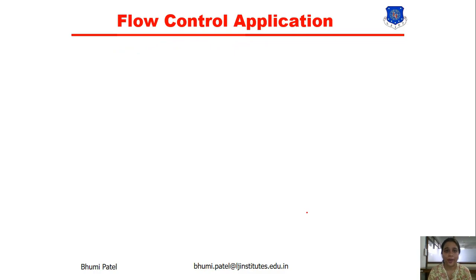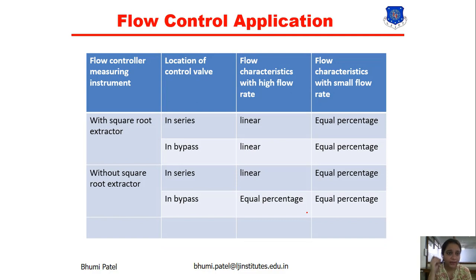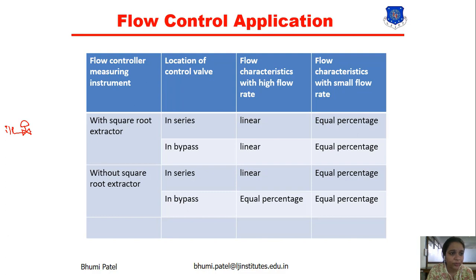Next is the flow control application. For a particular flow control, we can derive the valve characteristic. Here you can see the flow controller measuring instrument with and without a square root extractor. For the configuration with a square root extractor, the control valve can be connected in series through the system — this is the input, this is the control valve, and this is the process.